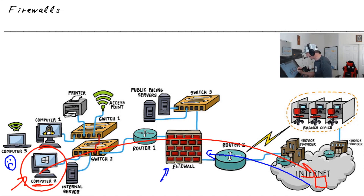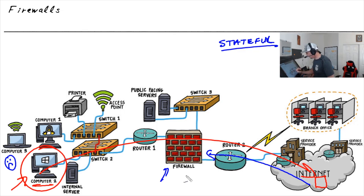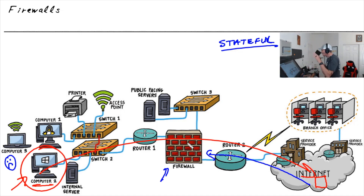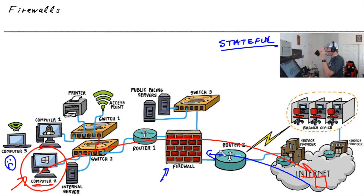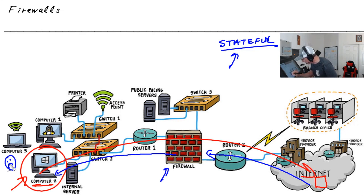To solve that problem of Bob not being able to get his response back from the server, most firewalls use a feature called Stateful. Stateful means we want the firewall to remember Bob and that he went out — remembering the state or conversation that Bob started as he went out to that internet resource. By remembering the state, when that internet resource replies back and the reply traffic is exactly what the firewall expected as a response to Bob's request, it will allow that reply traffic to come back to Bob, which makes Bob happy.